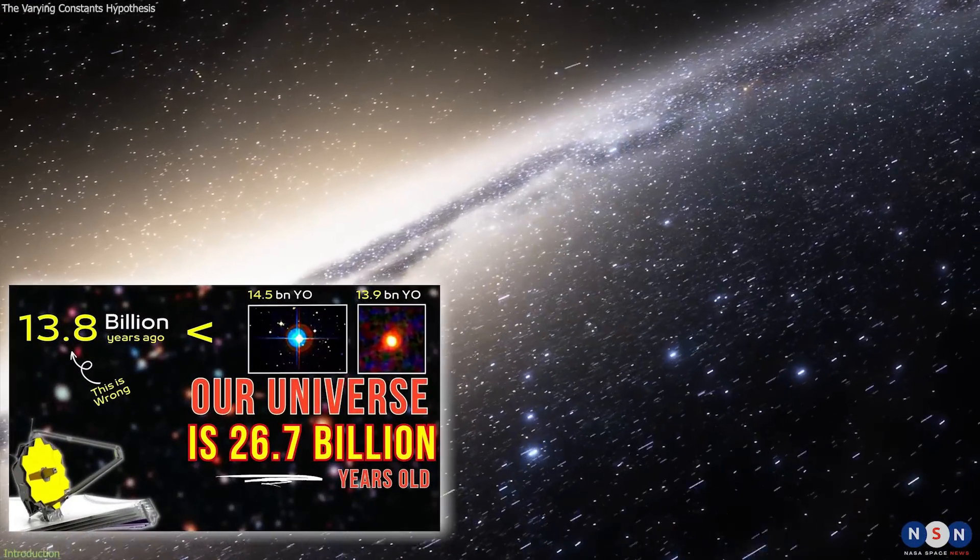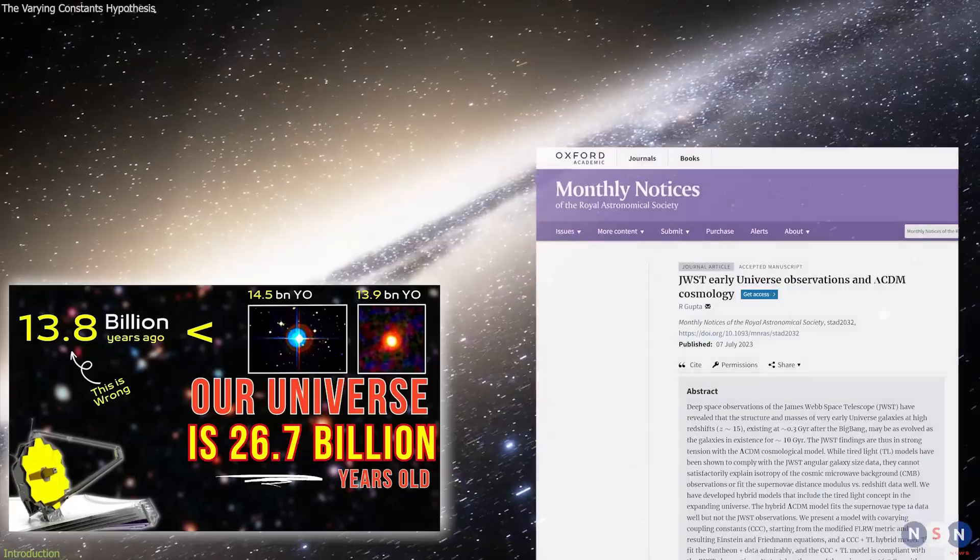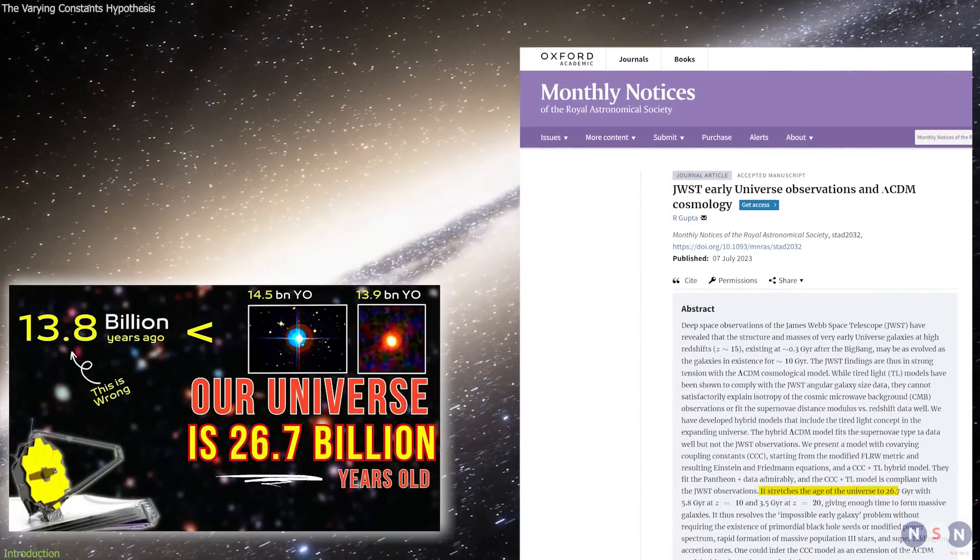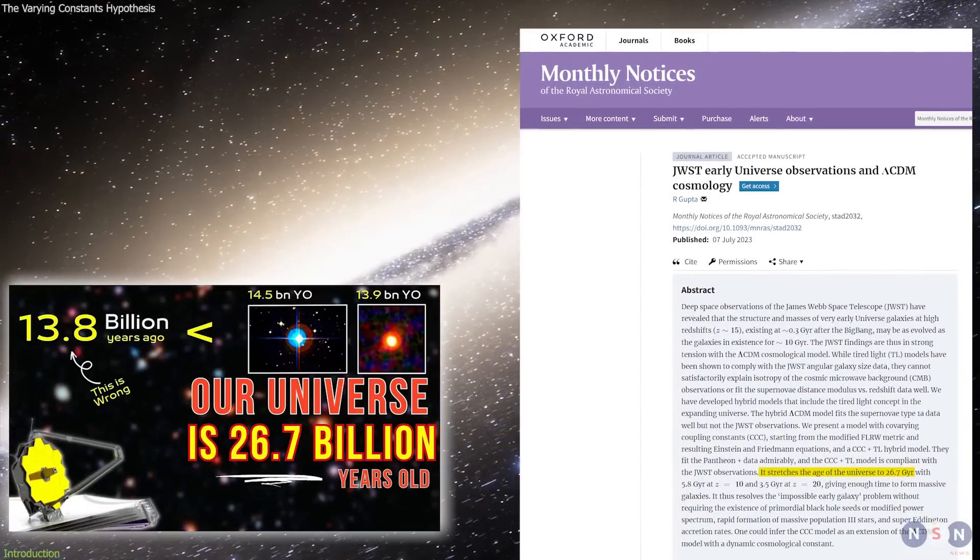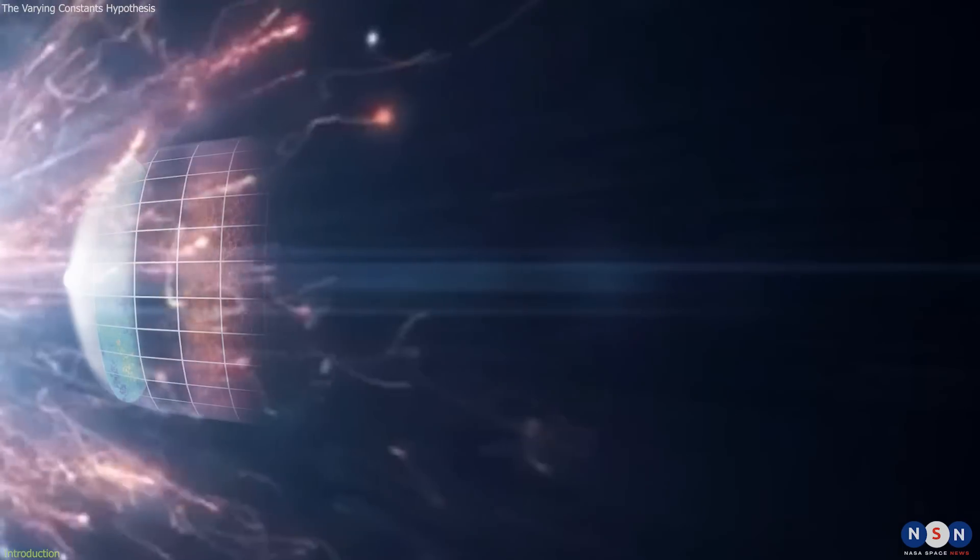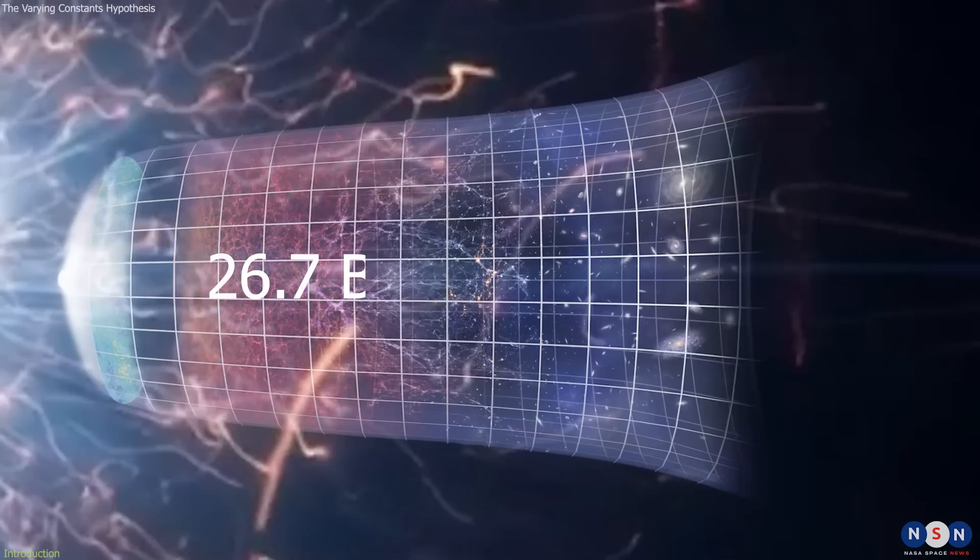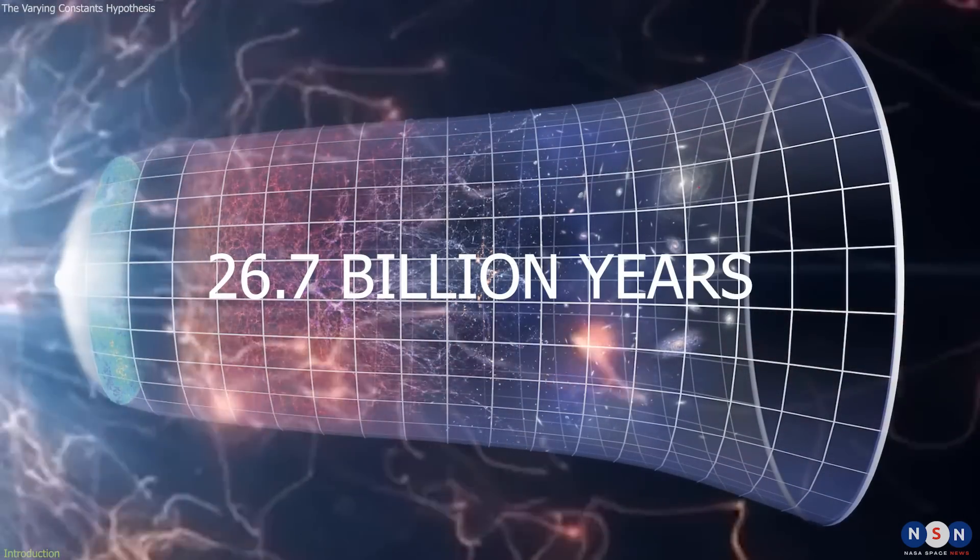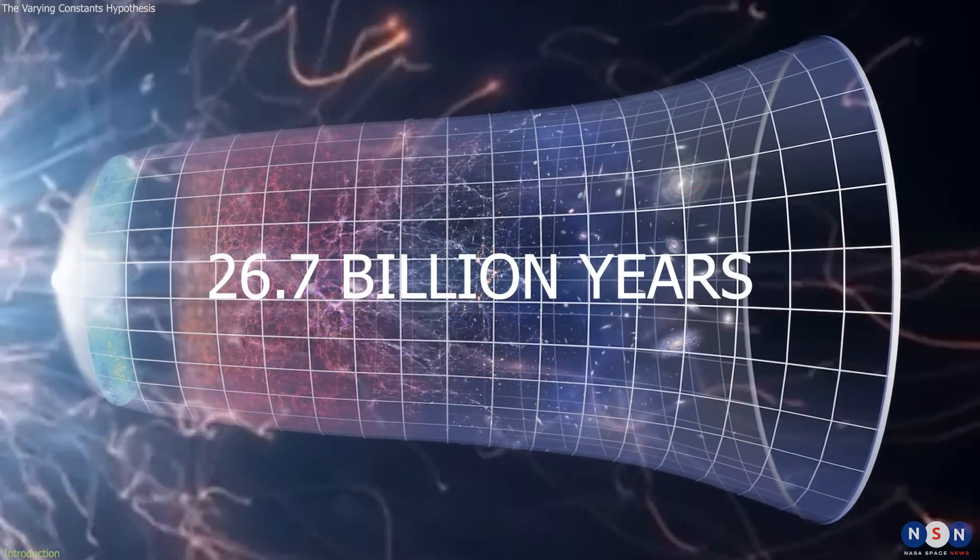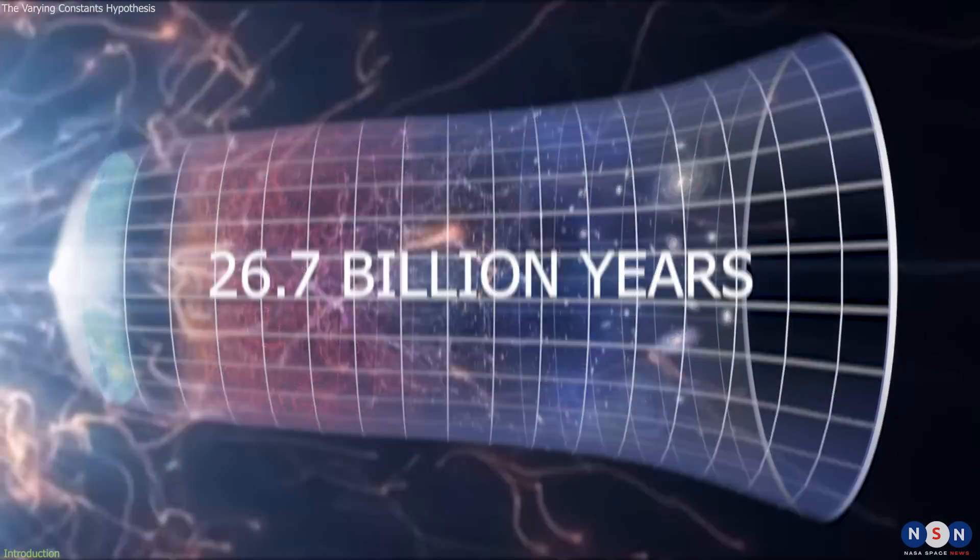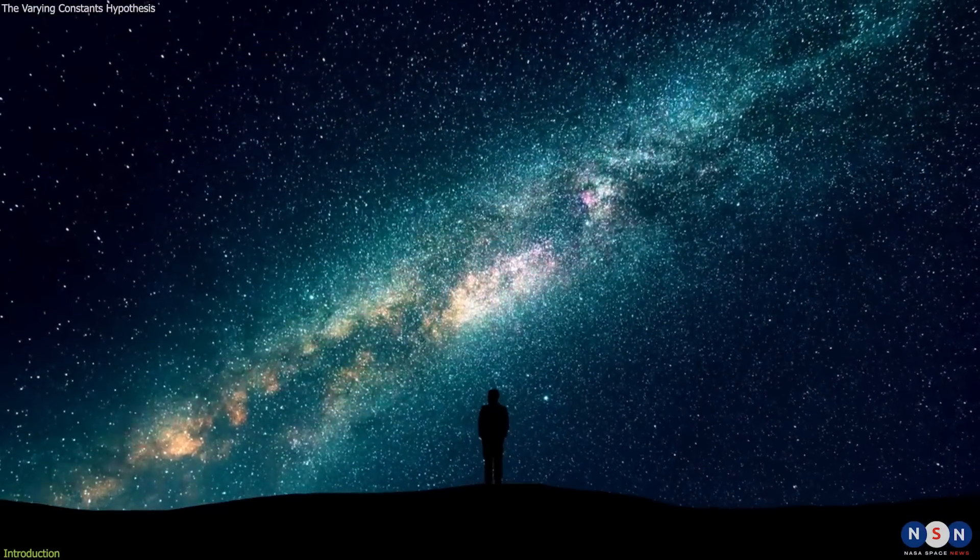In our previous video, we talked about a new paper that used this hypothesis to stretch the age of the universe to double its current age. That's right. According to this paper, the universe could be as old as 26.7 billion years instead of 13.7 billion years. How is that possible? And what does it mean for cosmology and physics?